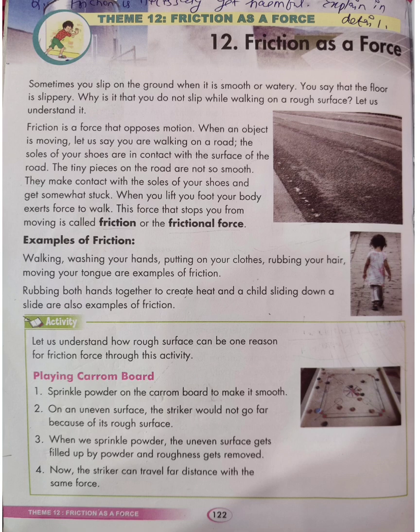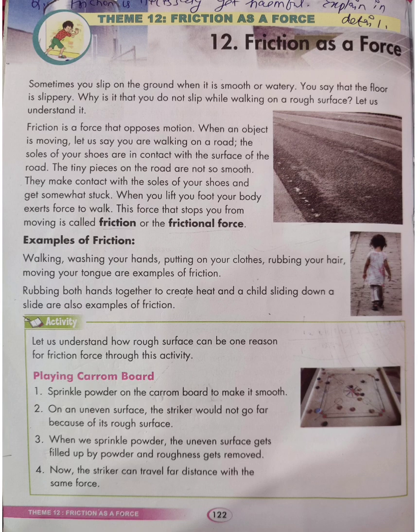Playing carrom board. You must have all played carrom board. Step 1: Sprinkle powder on the carrom board to make it smooth. Step 2: On an uneven surface, the striker would not go far because of its rough surface. Step 3: When we sprinkle powder, the uneven surface gets filled up by powder and roughness gets removed. Step 4: Now the striker can travel a far distance with the same force. From this activity, you must have understood that when the surface is smooth, friction is less, and when the surface is rough, friction is more — as we can observe while sprinkling powder on the carrom board, the friction decreases.